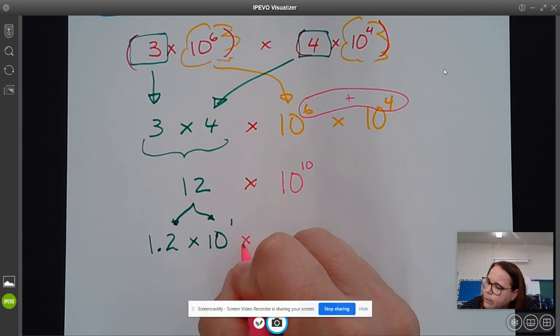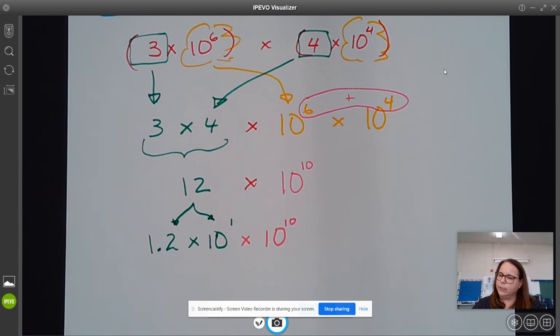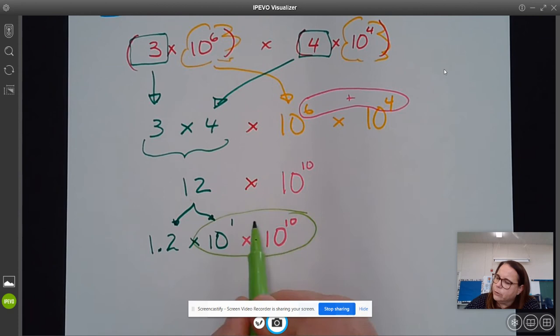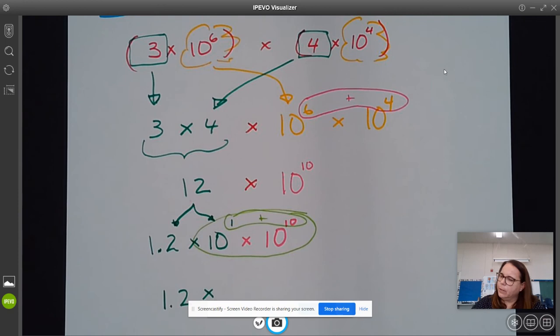And then what we're going to have to do is one more time join up these powers of 10. So now we're going to use that same rule we just used and add one more power of 10. And so our final answer is 1.2 times 10 to the 11th power.